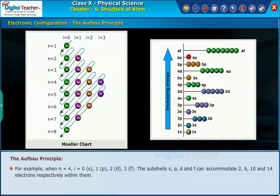The sub-shells s, p, d, and f can accommodate 2, 6, 10, and 14 electrons respectively within them.